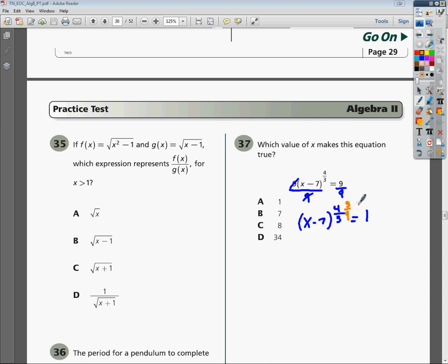Because technically, if you cross multiply, your 3s will cancel out and become 1s, your 4s will cancel out and become 1s, so that's all just going to be 1, which means you're just going to have x minus 7 one time.